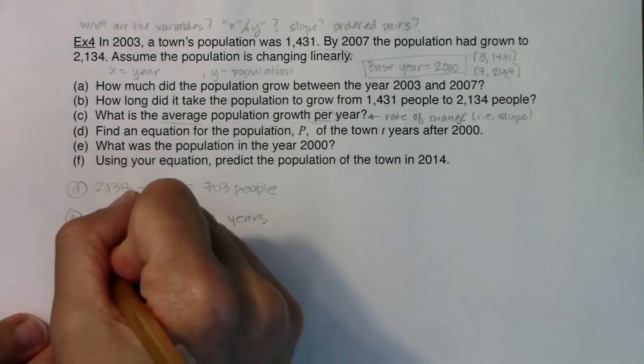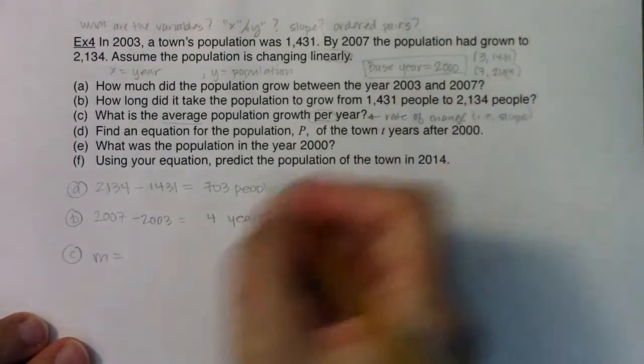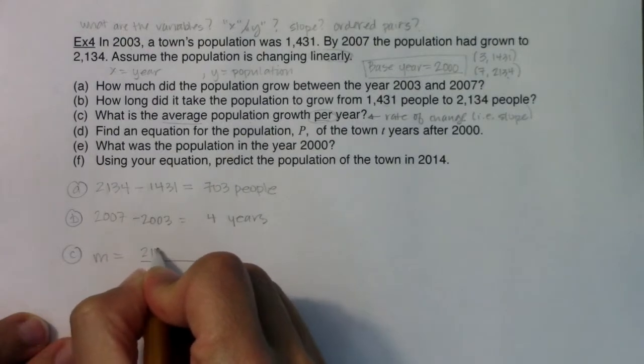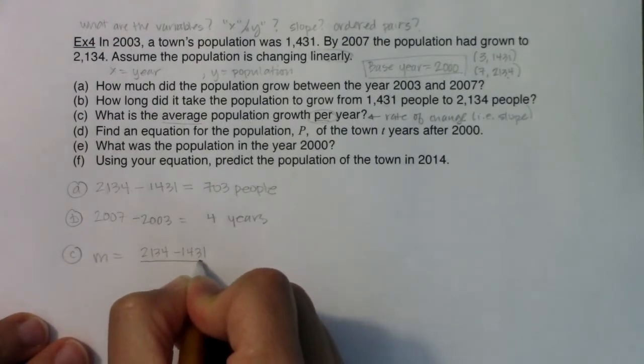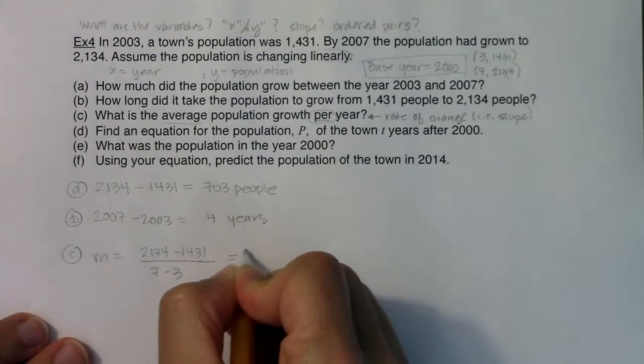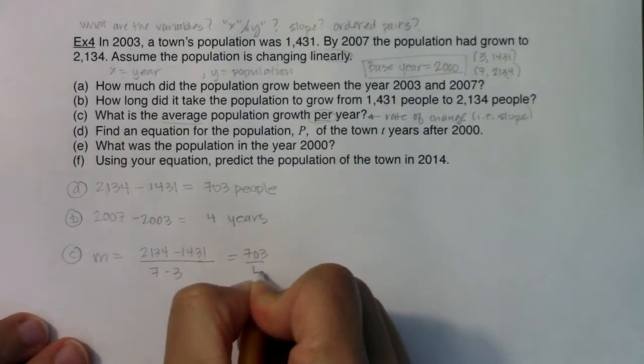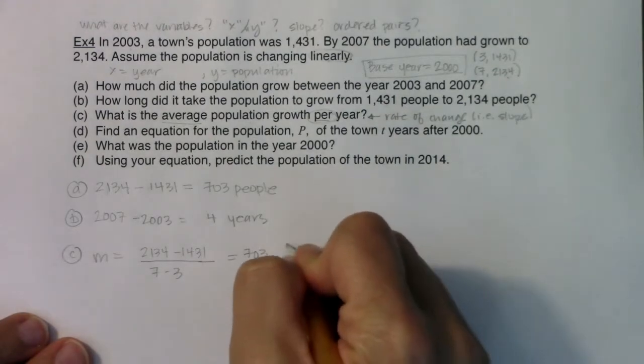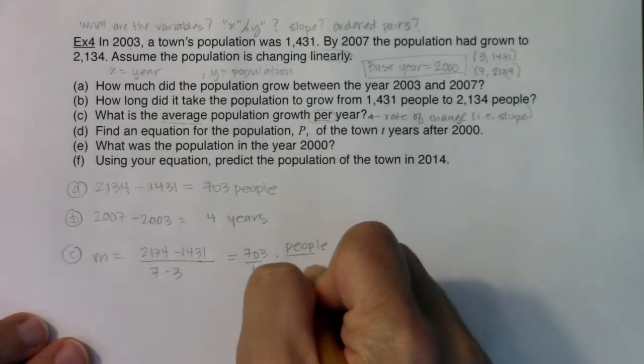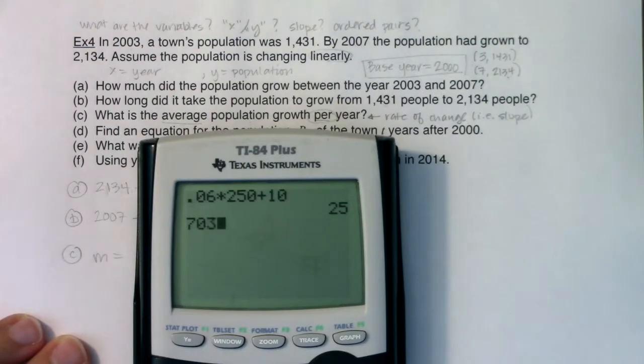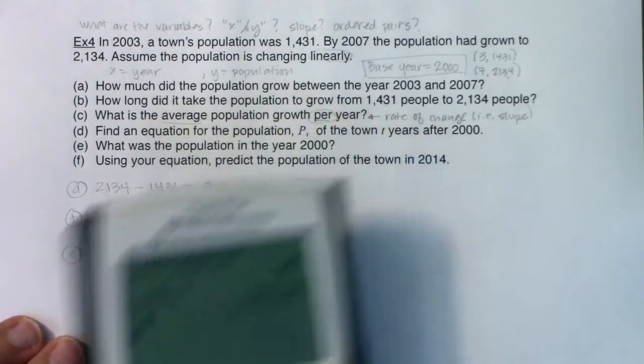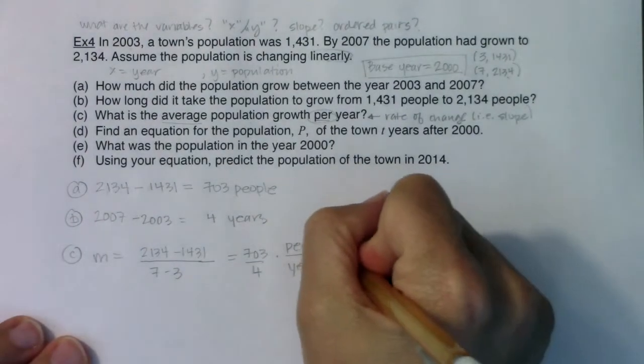If I wanted to find my slope, I would use my slope formula. So I would say M was equal to, the rate of change would be 2,134 minus 1,431 over my years of seven minus three. So this would be 703 in ratio to four. If I think about the units, that's people to year. Let's see what that is as a unit ratio. That's about 175.75.